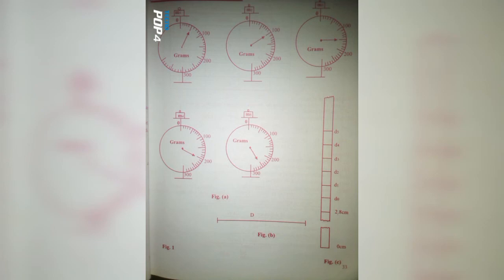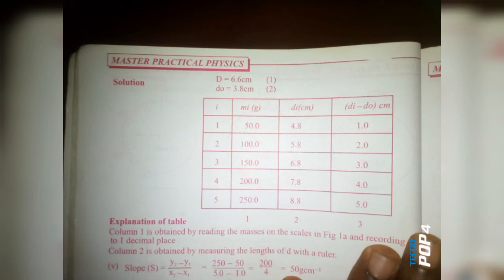Look at figure 1c where we have the depth of water when each mass is immersed. We have a point at 2.8 centimeters. From 2.8 upward to d₀, we have 1 centimeter, so our d₀ is 3.8. From d₀ to d₁ we have 4.8, then d₂ is 5.8, d₃ is 6.8, d₄ is 7.8, and d₅ is 8.8. That's how it's measured.